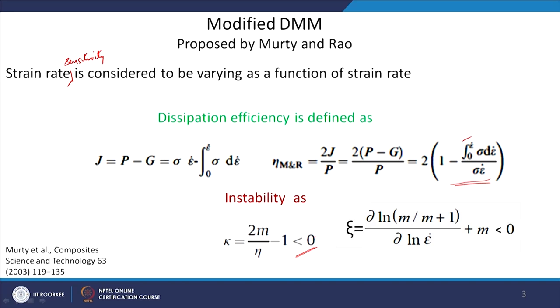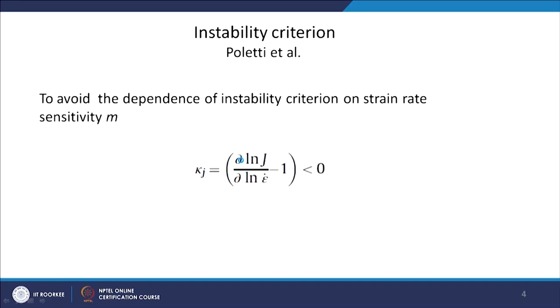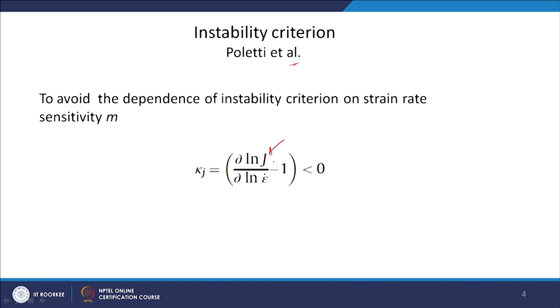So that is one variation looking at the same parameters in a different way. They calculated J as total power minus G, equal to sigma times epsilon-dot minus the integral from 0 to epsilon-dot of sigma d(epsilon-dot), from which they calculated the efficiency. There is another instability criterion proposed by Poletti and group, who said not to consider strain rate sensitivity in the calculation. Instead, they calculated directly from the J co-content variation as a function of strain rate, deriving the instability parameter Kj.